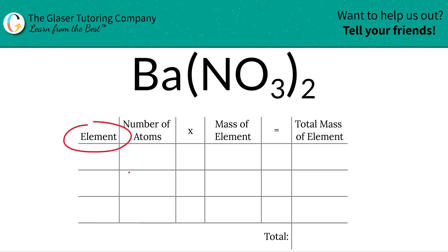So the first thing I'm going to do is write the elements I see in the compound. So I see barium, BA. I see nitrogen, N. And I see oxygen, O.